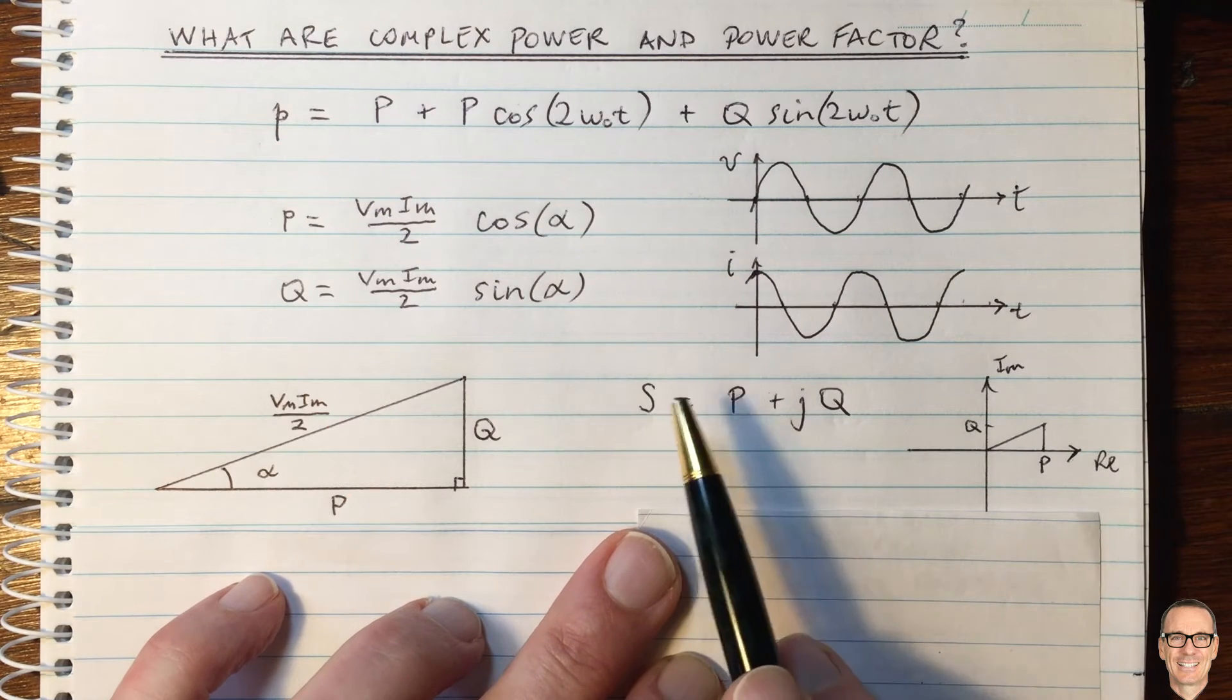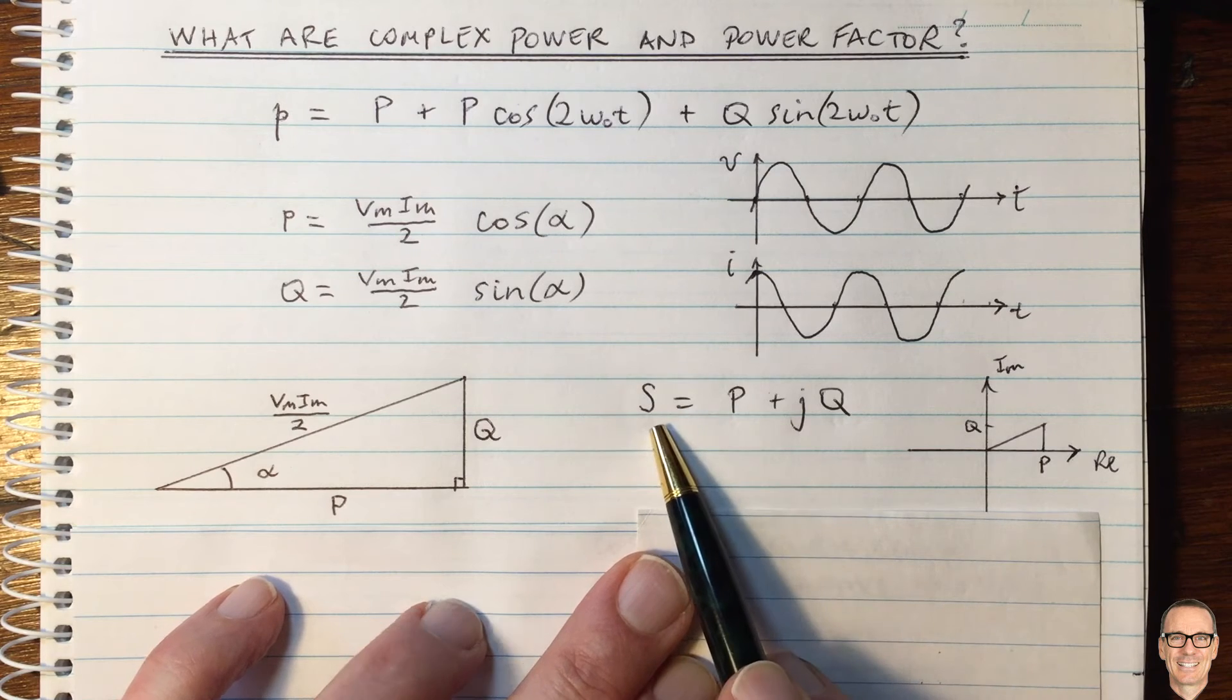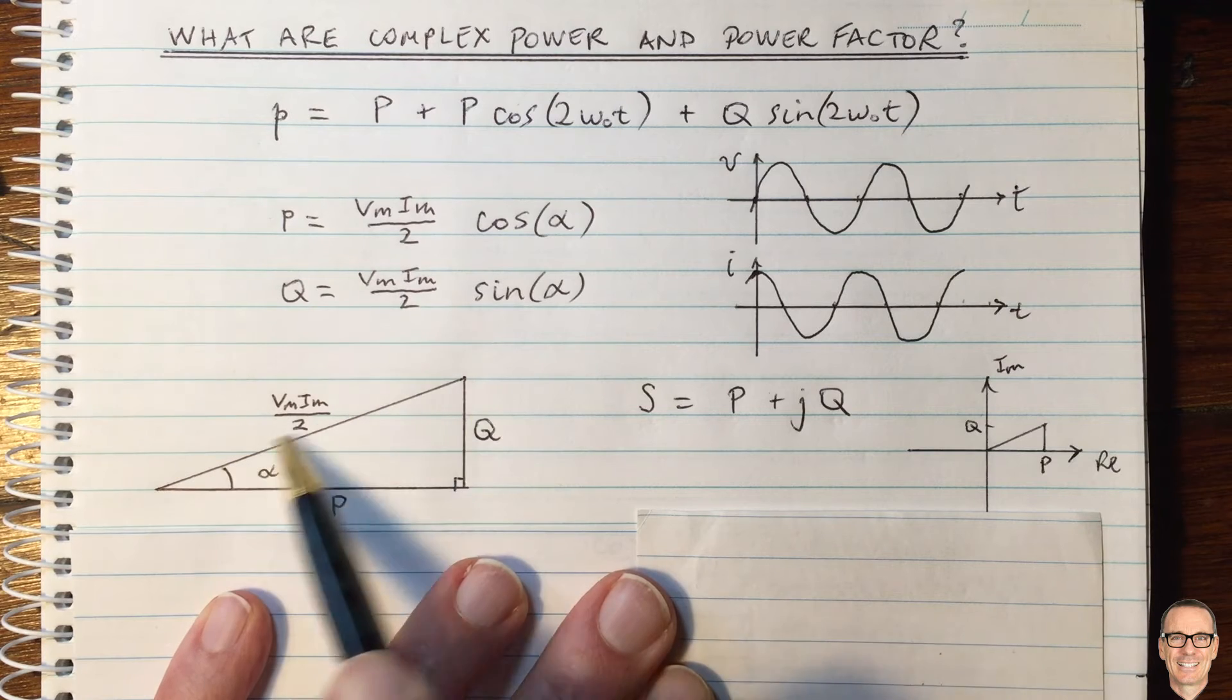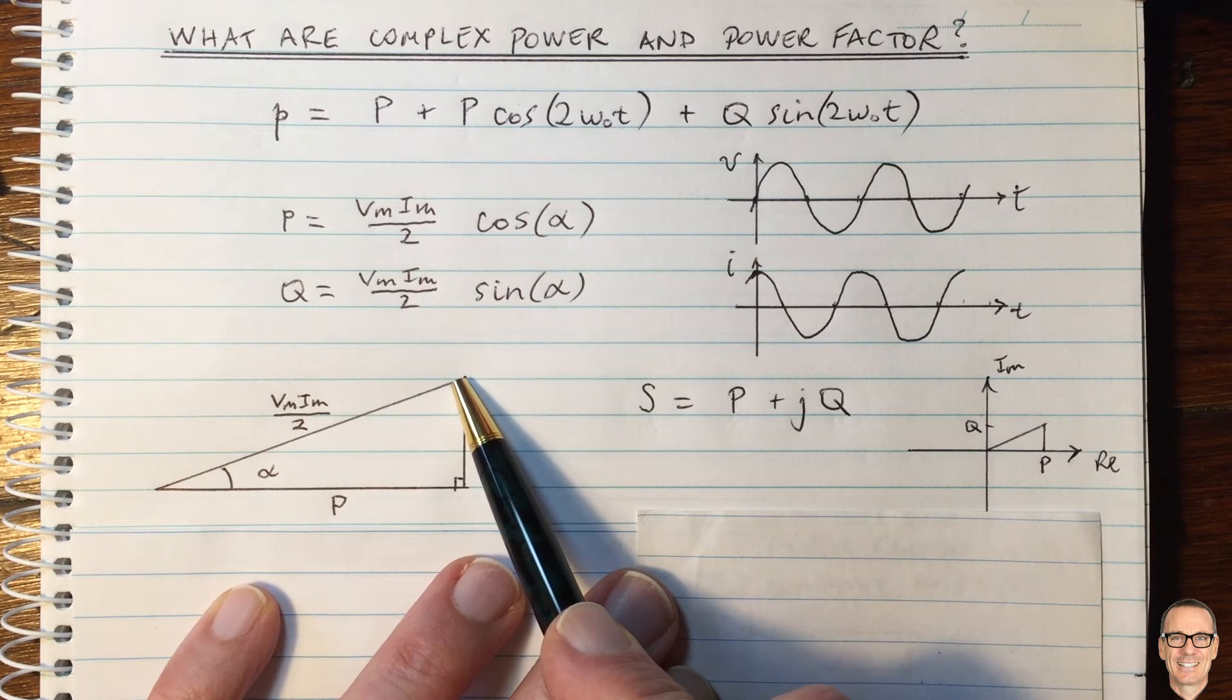Also, other things to not get confused by. This S does not mean that it is the total power. So S, the magnitude of S, is the length of this line here. That is not the total power. Sometimes people make that mistake.